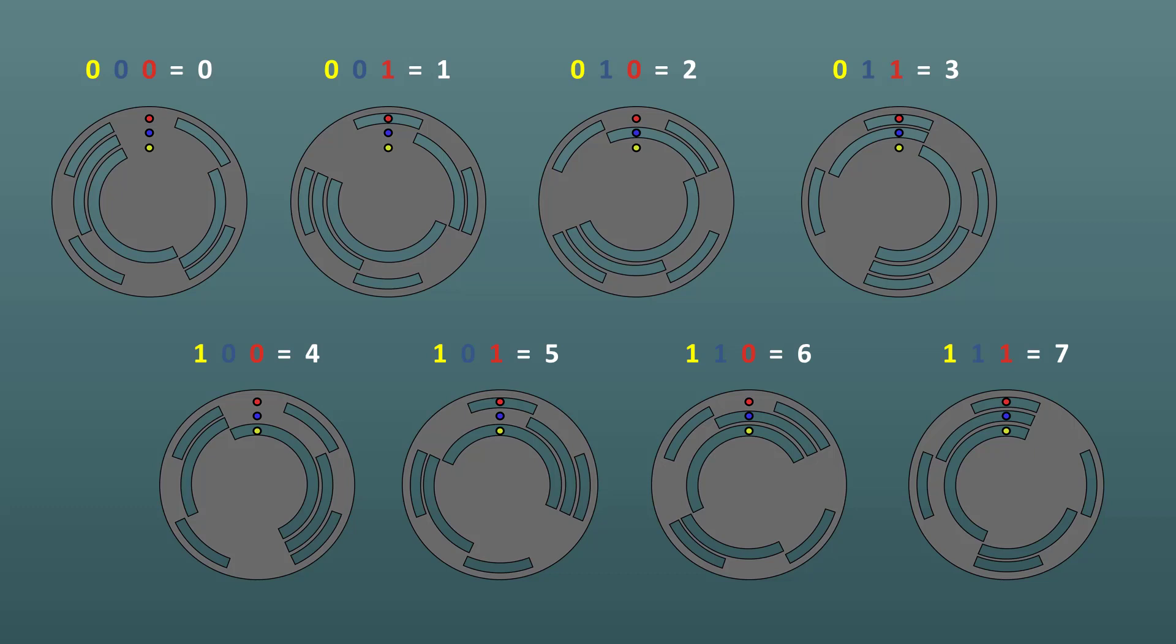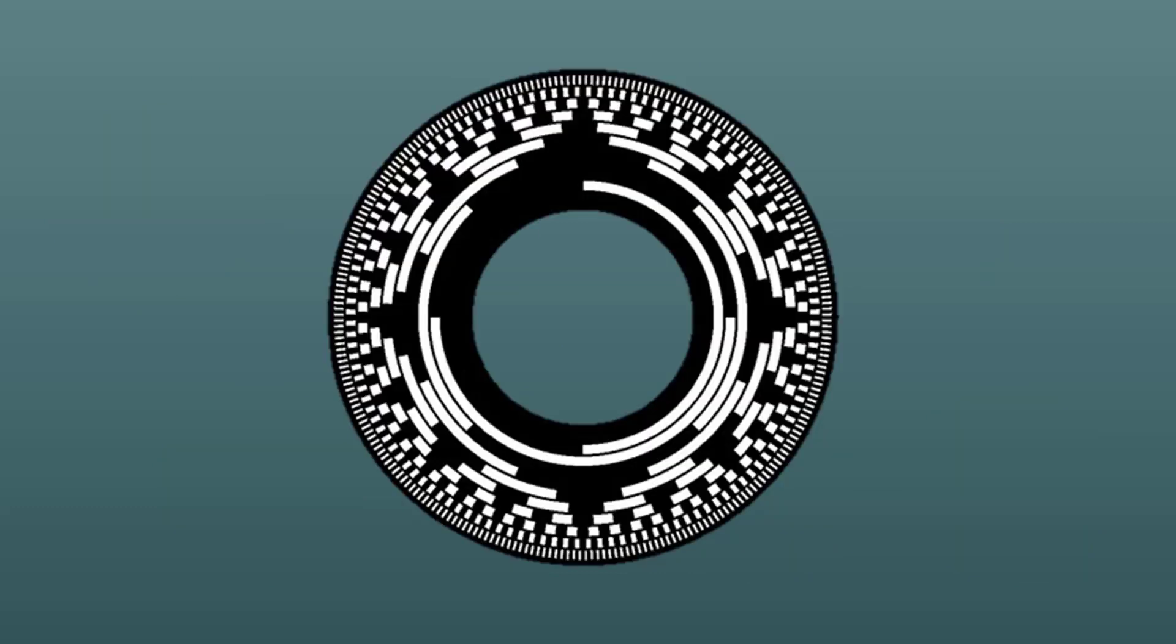In practice, you can purchase absolute encoders with resolutions of less than a tenth of a degree. Here's the grating pattern of a 10-bit absolute encoder. There are 10 sets of LEDs and sensors. This encoder has a resolution of 360 divided by 2 to the tenth, or 0.35 degrees.